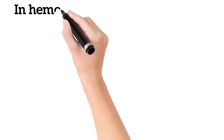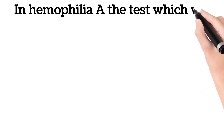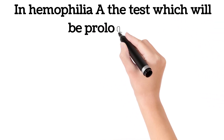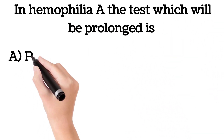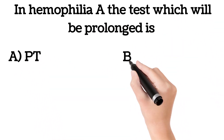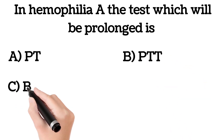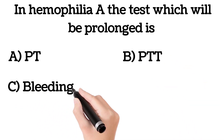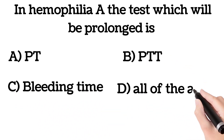In hemophilia, the test which will be prolonged is: A. PT, B. PTT, C. Bleeding time, D. All of the above.